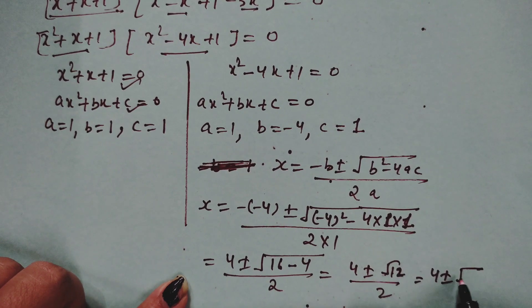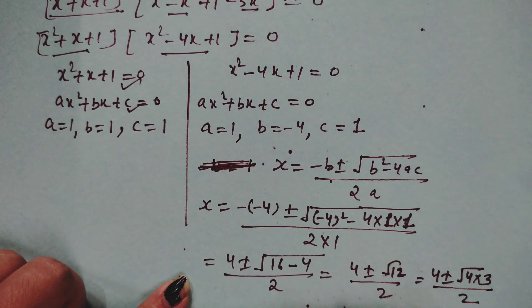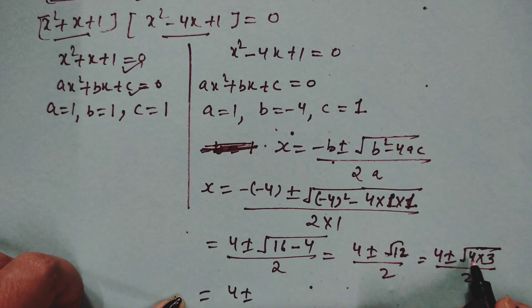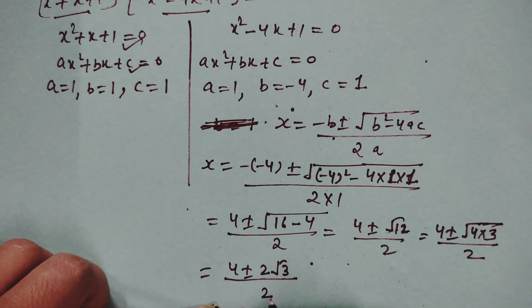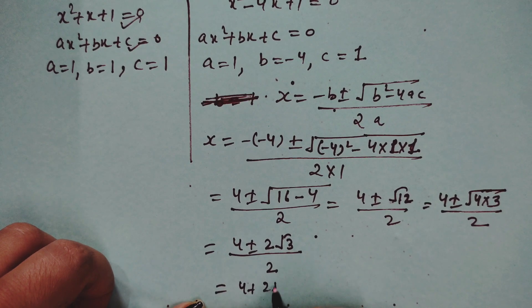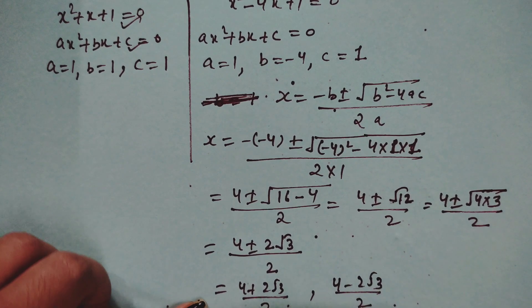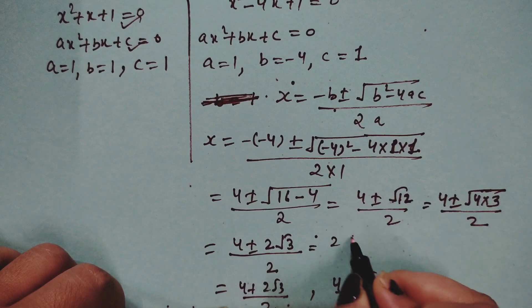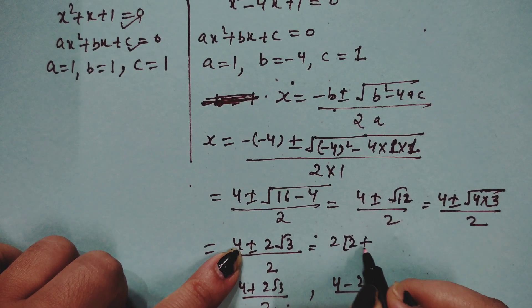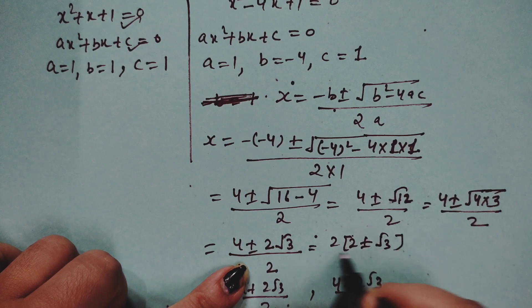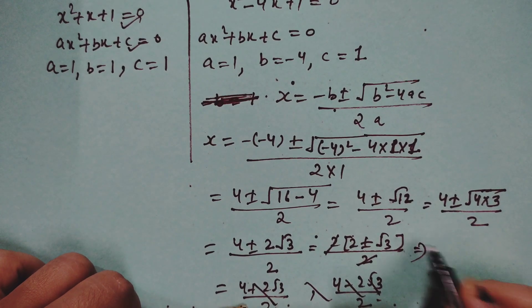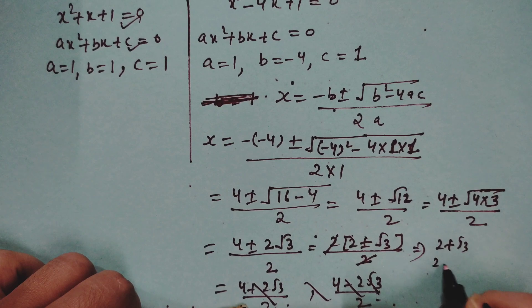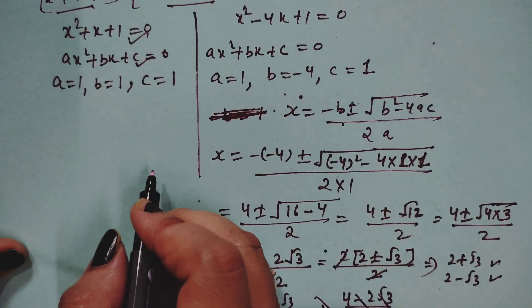Simplifying √12 = √(4·3) = 2√3. So x = (4 ± 2√3) / 2. Factoring out 2: x = 2 ± √3. This gives two values: x = 2 + √3 and x = 2 − √3.